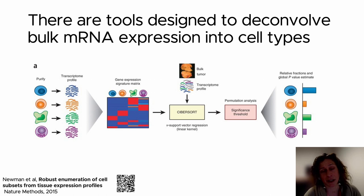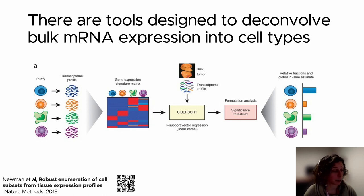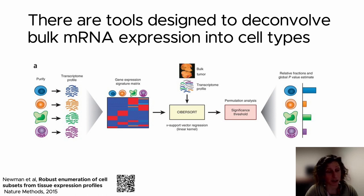There have been many tools developed to deconvolve tumor gene expression data to better understand this immune landscape. This is an example from one of the earlier papers called CyberSort, which lays out the way the algorithms work. They take sorted cells where they know the specific cells of origin — the specific immune cells. This paper used 22 different types of immune cells, measured their gene expression, and identified those specific genes uniquely expressed in each immune cell. This creates what they call a signature matrix, which is then used to deconvolve from a bulk tumor gene expression measurement the fractions of estimated cells in each tumor.